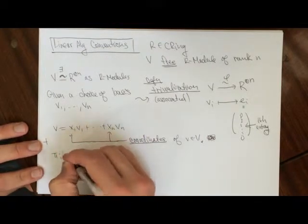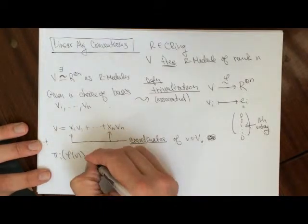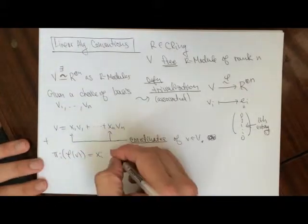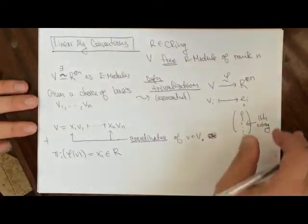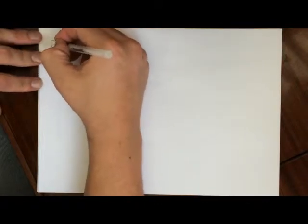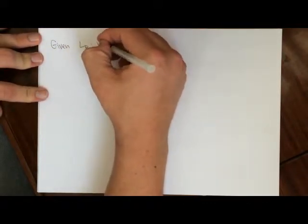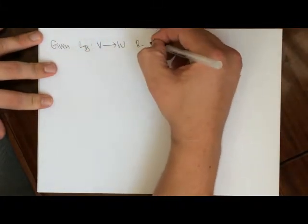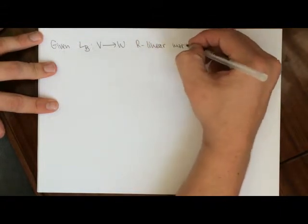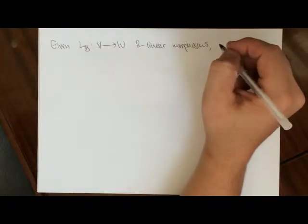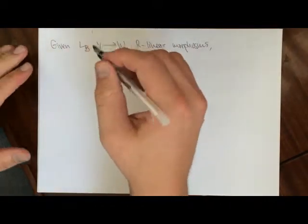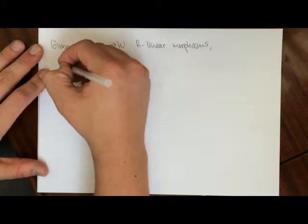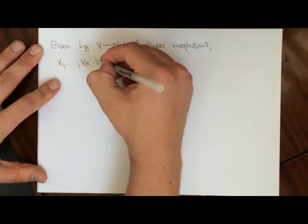The coordinates are the pi_i of phi(v) — so these are the i-th coordinates, and each is an element of R. Given a linear transformation between two free R-modules, this is an R-linear morphism — a morphism of R-modules. We think of it as given by a matrix B.